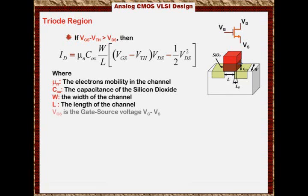VGS is the voltage from the gate to the source, or it is the gate to source voltage, which means it is VG minus VS. VTH is the threshold voltage. It's the minimum voltage required to create the channel. VDS is the voltage from the drain to the source, which is VD minus VS.